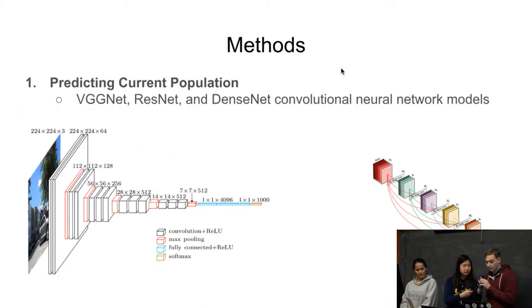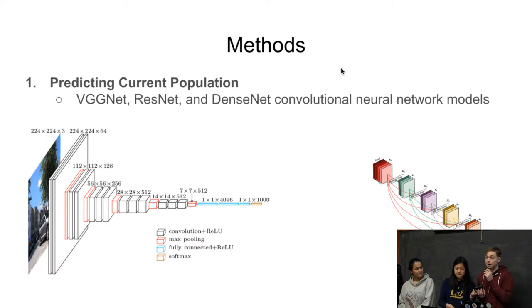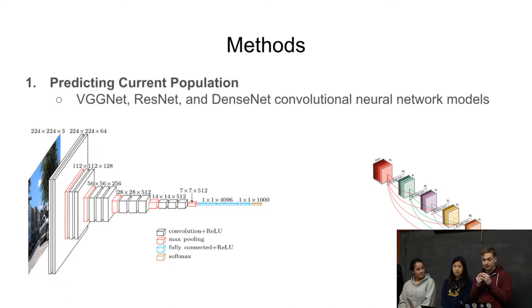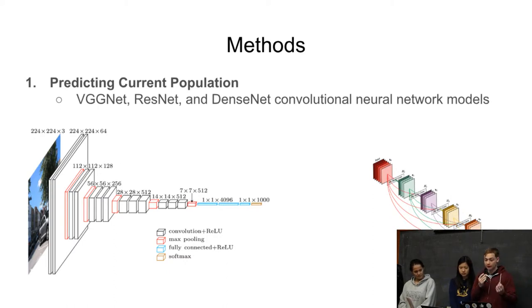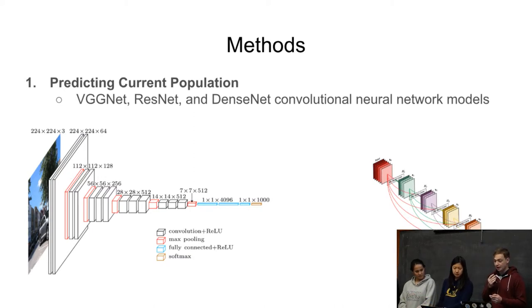Our methods are inspired by past research done primarily on American and Ugandan population predictions. We want to improve on this research by using a lot more data and focusing more on regression to predict the population instead of only classification. Here are a few models we plan to use: VGGNet on the left and DenseNet on the right.